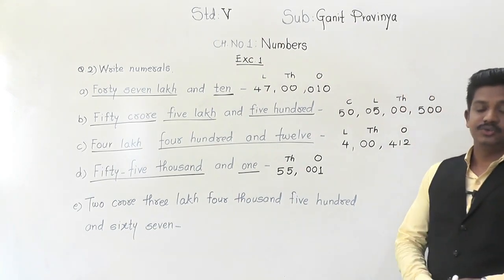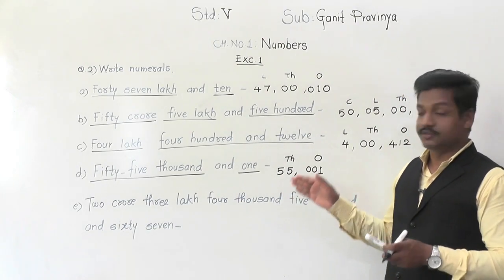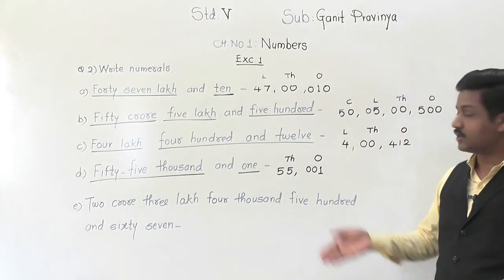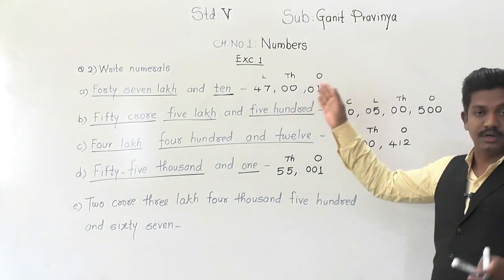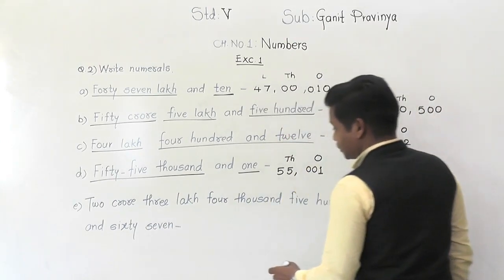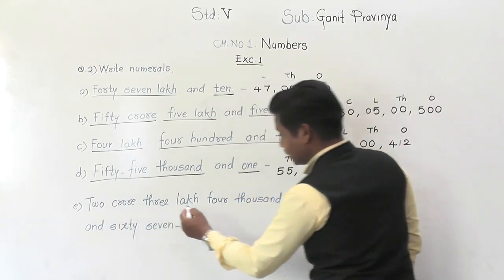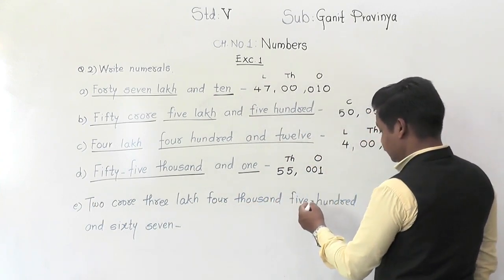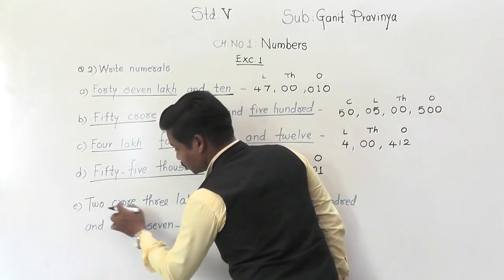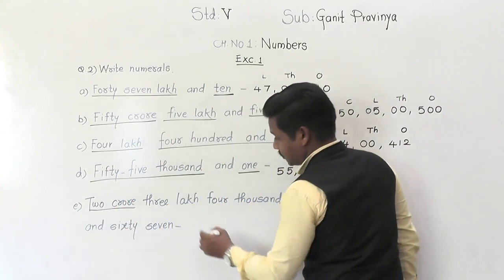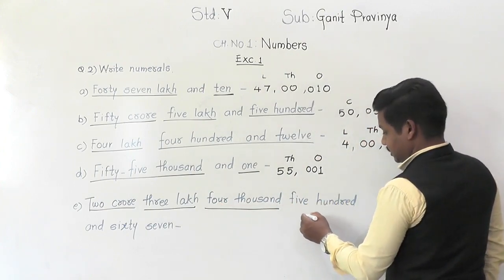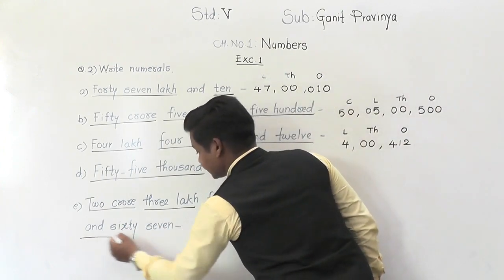Once you are familiar with the groups, you need not write group names every time — but first, practice again and again. Next number name: 2 crores, 3 lakh, 4 thousand, five hundred and sixty-seven. Underline and identify the groups: 2 crores, 3 lakh, 4 thousand, and 567. All four groups are present.